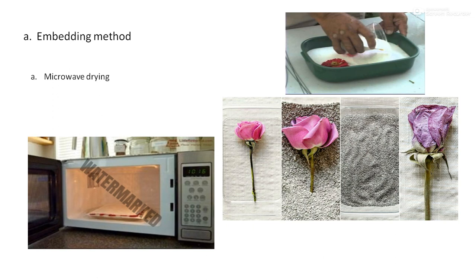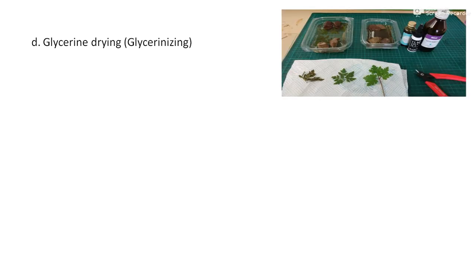Microwave drying is another technique that can be used for drying many useful and high-graded flowers. Glycerin drying involves the absorption of moisture by highly concentrated glycerin from plant tissues, causing the tissues to become dried.